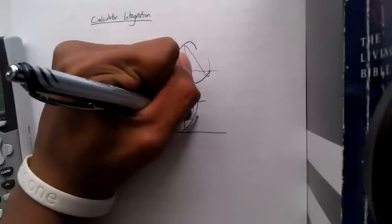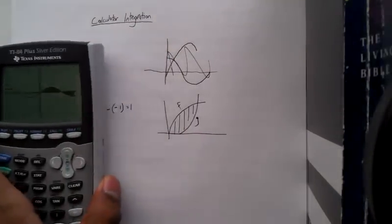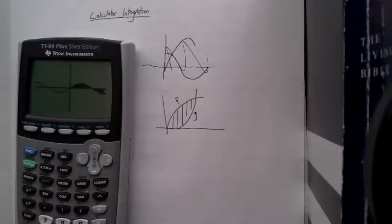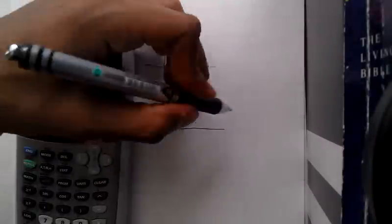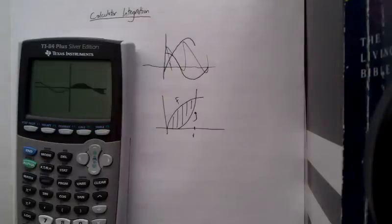Say this one was F and this one was G. Then, if you graph F... Say this is just 1. So if you graph F from 0 to 1,